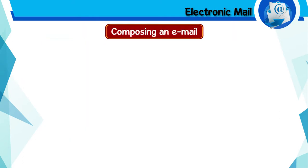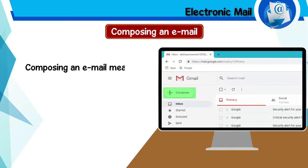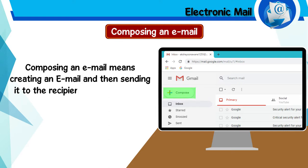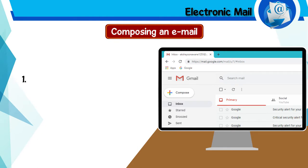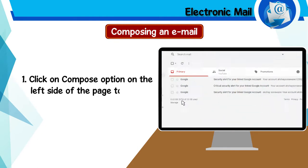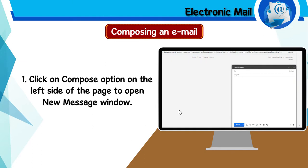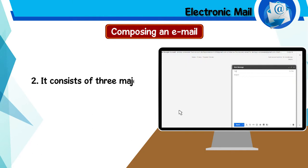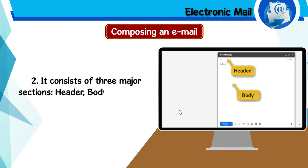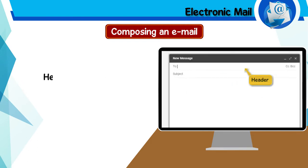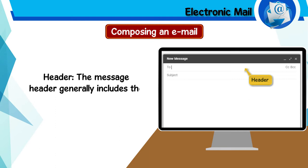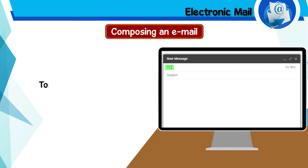Composing an e-mail means creating an e-mail and then sending it to the recipient. To compose an e-mail, follow these steps. Step 1: Click on the 'Compose' option on the left side of the page to open a new message window. It consists of three major sections: header, body, and footer. The message header generally includes the following fields: 'To' — the person to whom you wish to send the e-mail.